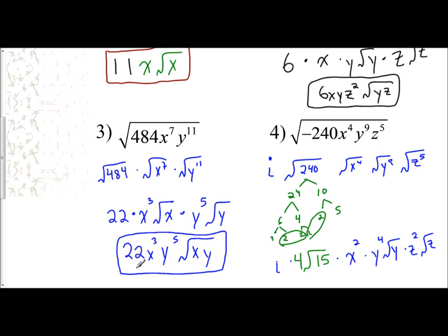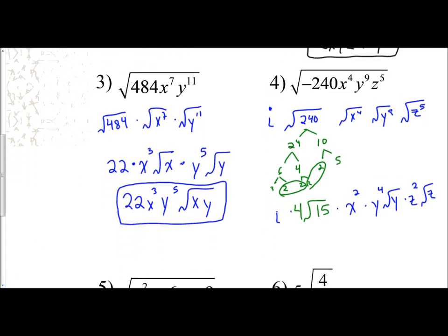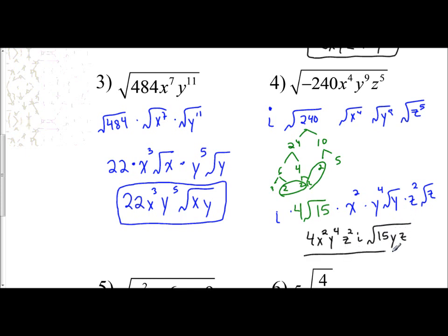So what's the final answer? Piece it all together. On the outside I have 4, x squared, y to the 4th, z squared, and i. So I have 4x squared y to the 4th z squared i. On the inside I have 15, y, and z. So the final answer is 4x²y⁴z²i times the square root of 15yz.